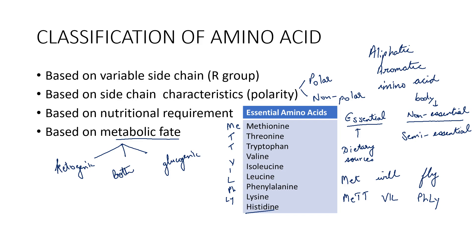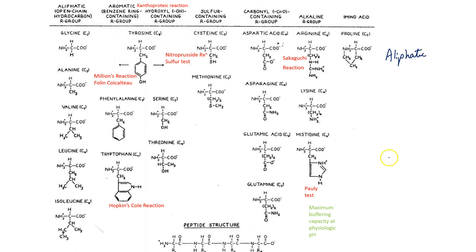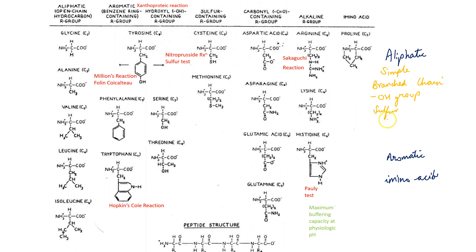Coming on to the first classification — based on variable R group — we can classify them into aliphatic, aromatic, and imino acids. The aliphatic amino acids can further be classified as simple amino acids, branched chain amino acids, hydroxyl group-containing amino acids, sulphur-containing amino acids, acidic amino acids and their amides, and basic amino acids.